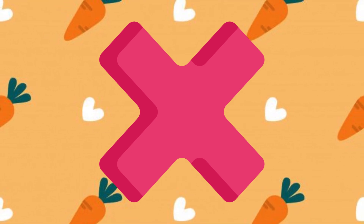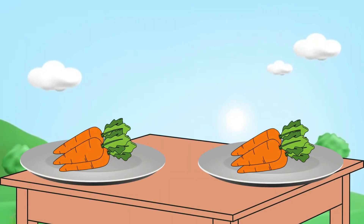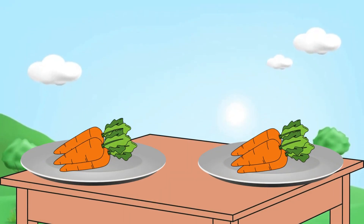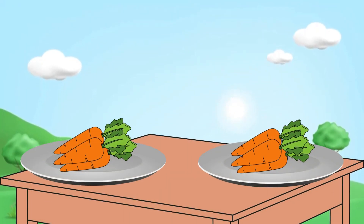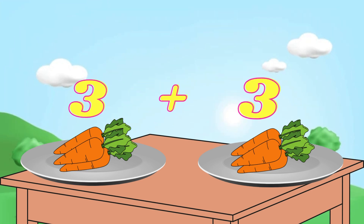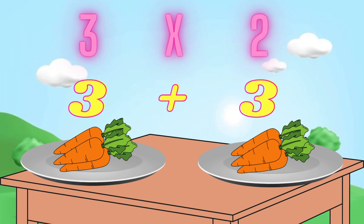For example, if I had two plates of carrots, with three carrots in each plate, instead of saying three plus three, this can be written as three times two, which is three into two places.